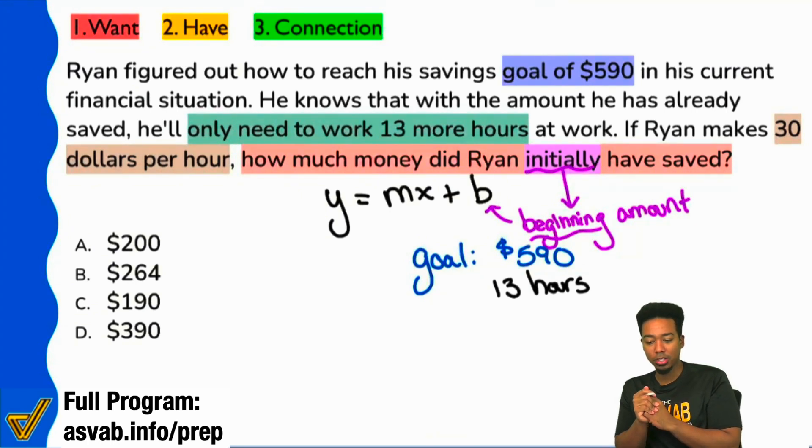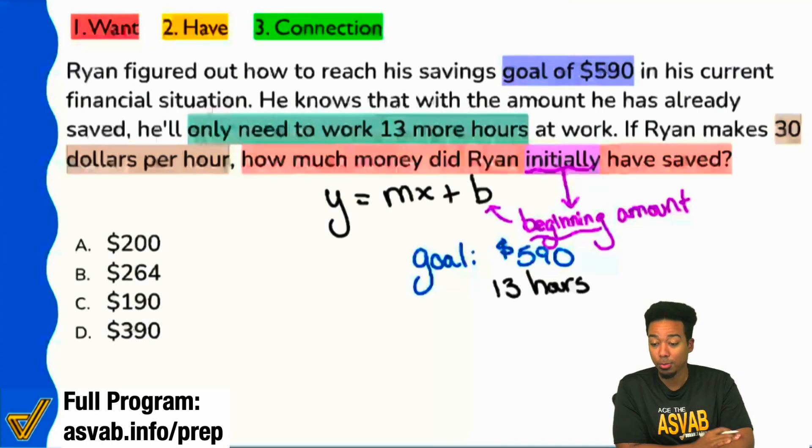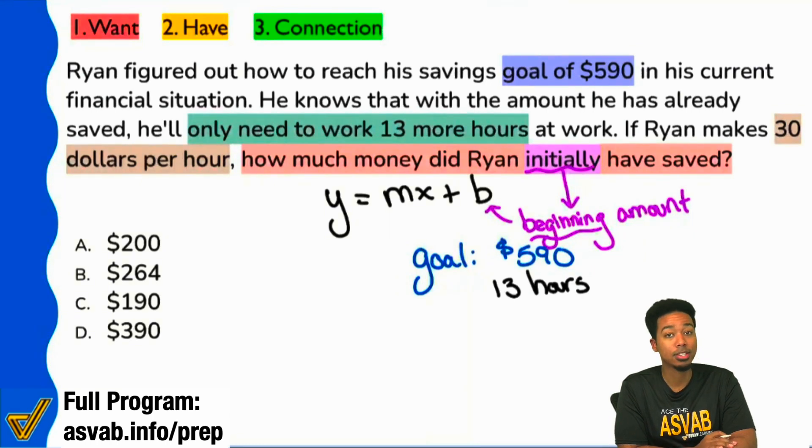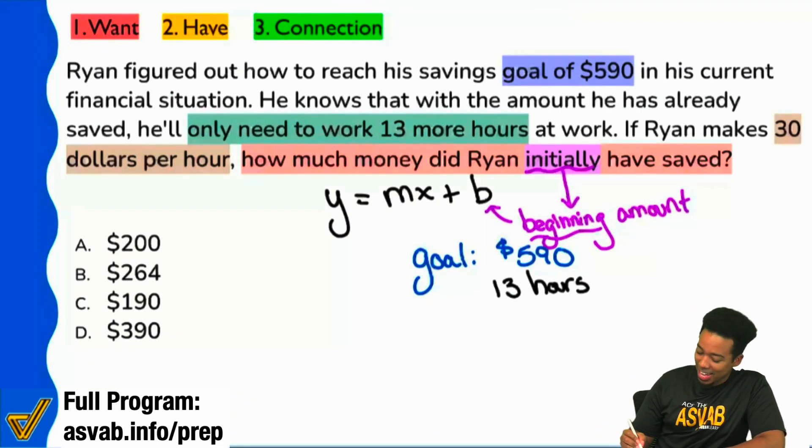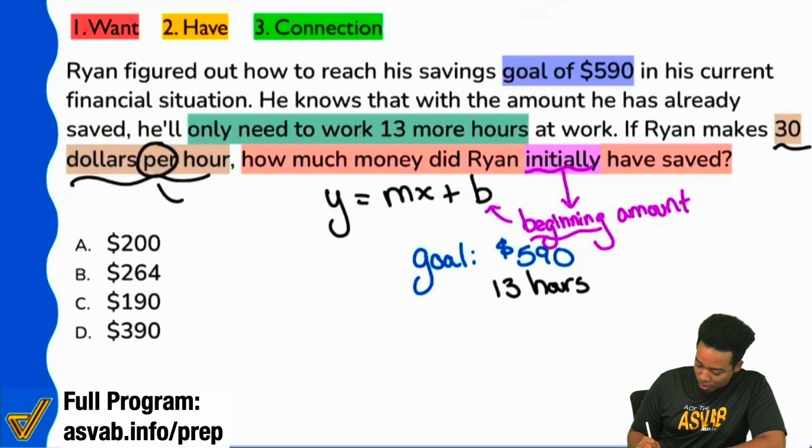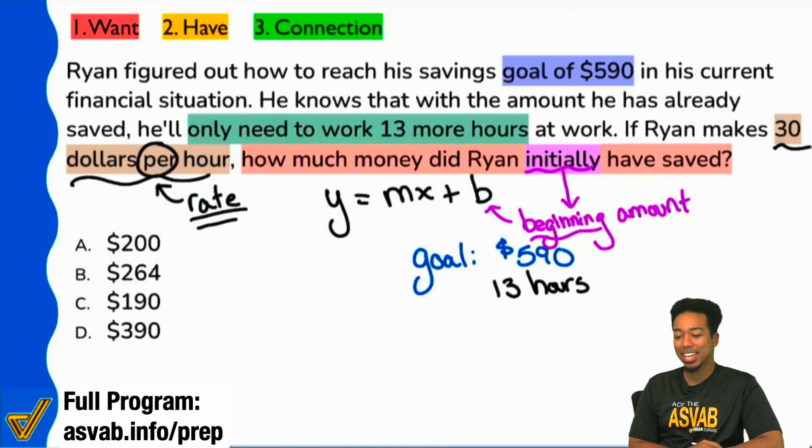Yep, that's it right there. The word per is what gives it away. I think I need Ryan's job for real, $30 per hour. Hey, as a teacher, if you can get me making that much, that'd be a great day. So with that, yep, that is a rate. That is it right there. The word per tells you that this is a rate.